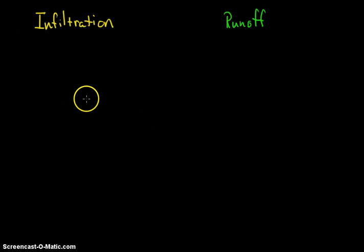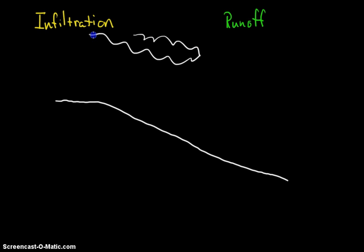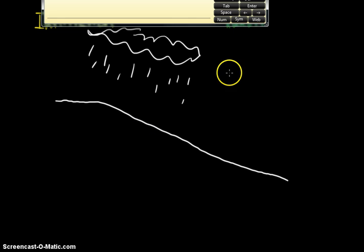So there's our gradient, and here's our precipitation, right? And so we need to have some vegetation. Vegetation is just plants, right?